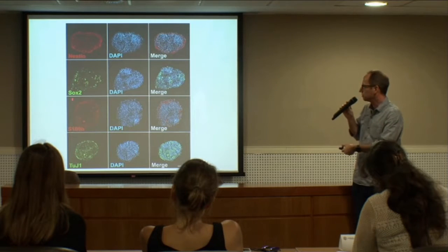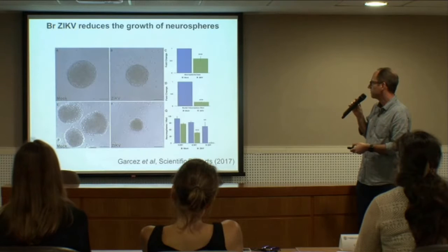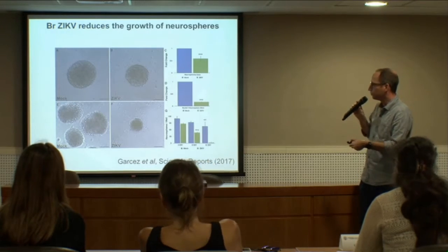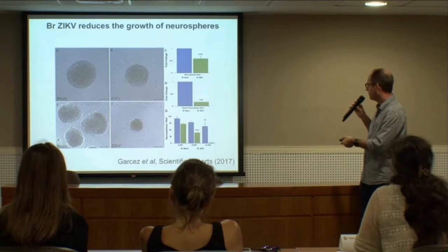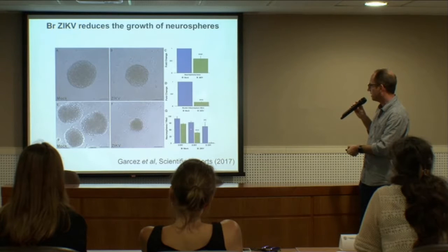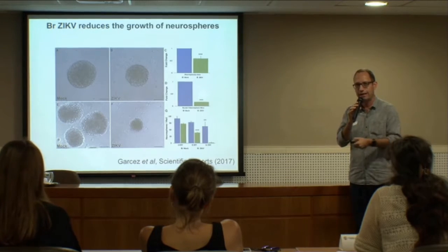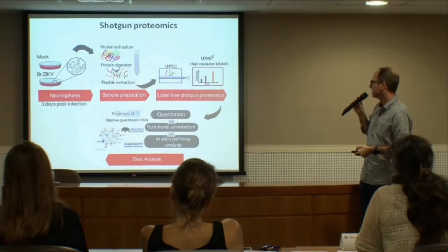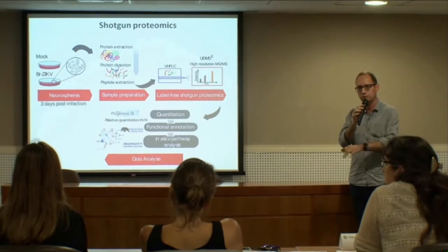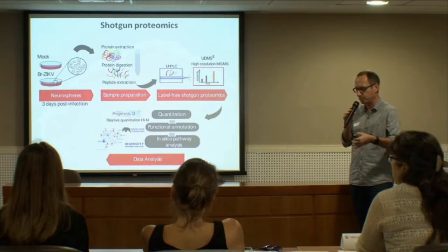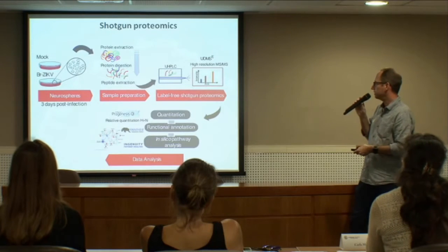The neural spheres contain neural stem cells, young neurons, and radial glial cells. We identified a stage — between three and six days — where the cells are still present with no real change in morphology, but are already infected. So we examined what happens to these cells after infection but before death. To do that, again in collaboration with Juliana Minardi and Daniel Martins, we performed shotgun proteomics to try to cover all changes in gene expression and protein production in these neural spheres three days after infection.